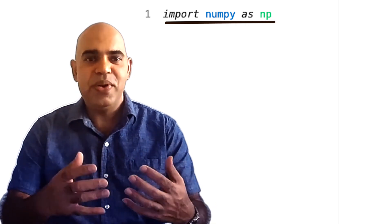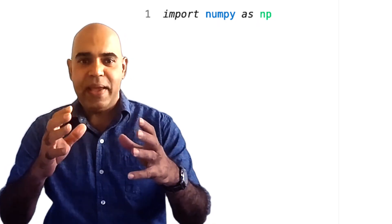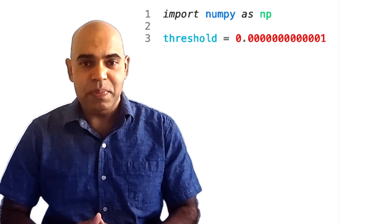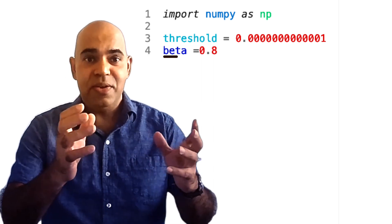First, we import the NumPy library. Next, we define two variables, threshold and beta.